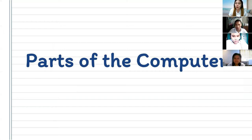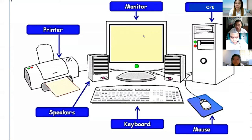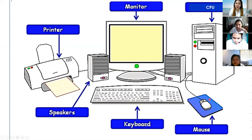So first, we have here the monitor. This is the monitor. Next, we have here the CPU. This is the CPU. Next, this one is the mouse — here, this one is the mouse. And then we have here the keyboard. This is the keyboard. Next, we have here two speakers. This is the speakers. And then, printer. This is the printer.